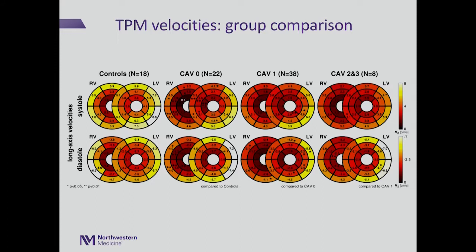In terms of velocities, between the CAV0 group and controls there were several segments showing reduced systolic velocities in the left ventricle, particularly in the longitudinal direction. In the right ventricle, an even higher number of segments showed reduced velocities in both systole and diastole.